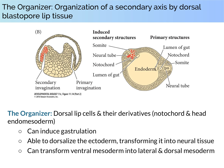Additionally, the organizer has the ability to change the fate of surrounding cells. Specifically, it dorsalizes tissue: in the ectoderm, that means forming neural tissue as opposed to epidermis. It can also transform ventral mesoderm into lateral and dorsal mesoderm. As we'll see later, the ability of the organizer — and particularly the notochord, which is part of the organizer and is visible underneath the neural tube — to induce dorsalization of the ectoderm into neural tissue is tied to early events that occurred prior to gastrulation. Now take a look at this video of what Spemann and Mangold would have observed as they performed their transplantation experiments.